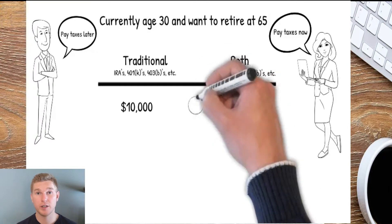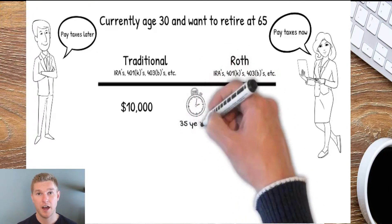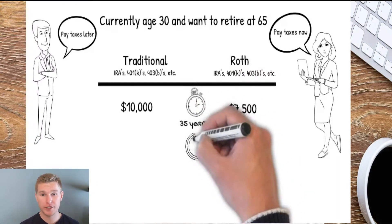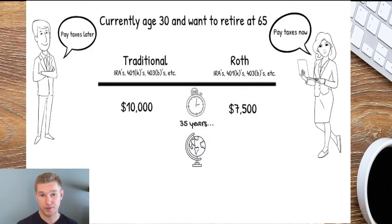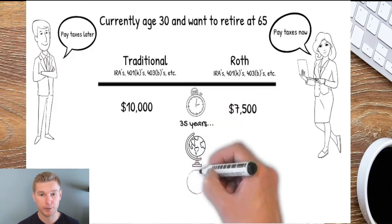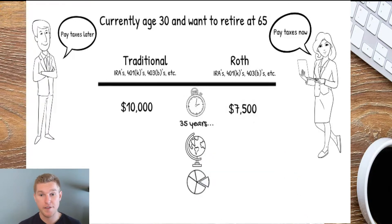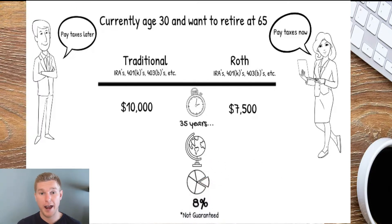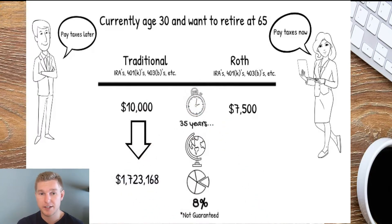Now let's assume these two continue the same strategy for the next 35 years, invested in globally diversified portfolios using low-cost index funds, reinvesting their dividends and periodically rebalancing — achieving annualized nominal returns of hypothetically 8%. After 35 years, Tom ends up with $1,723,168.